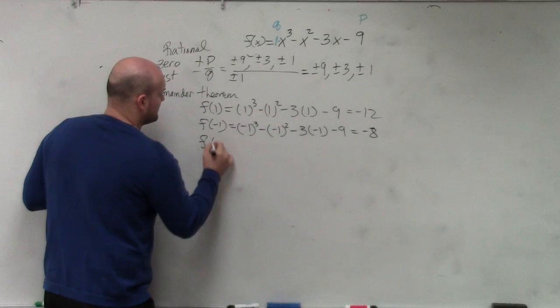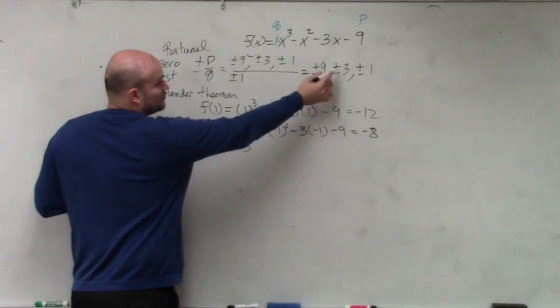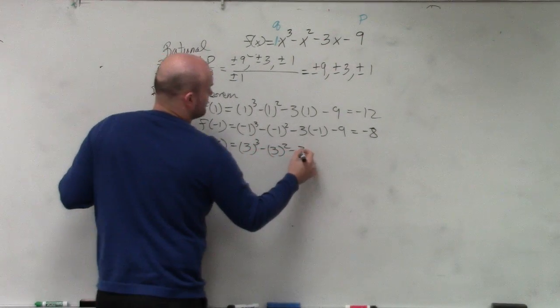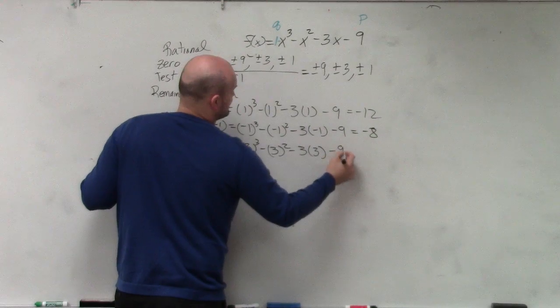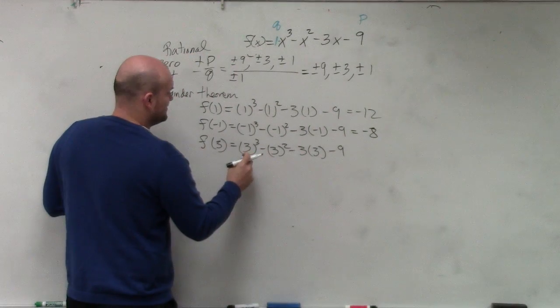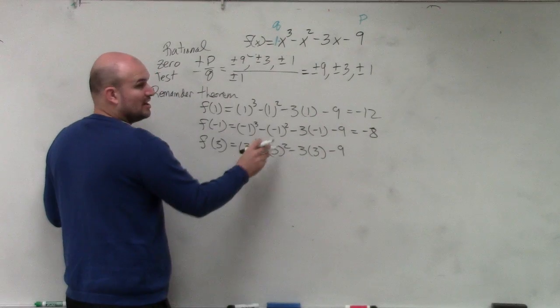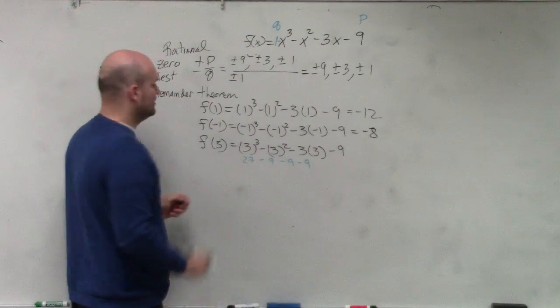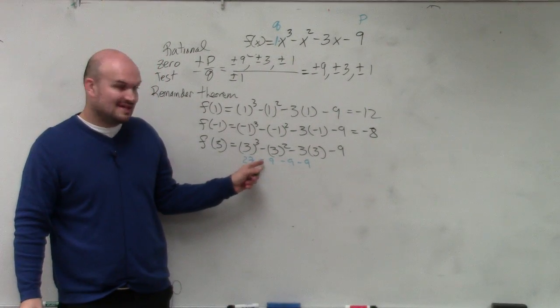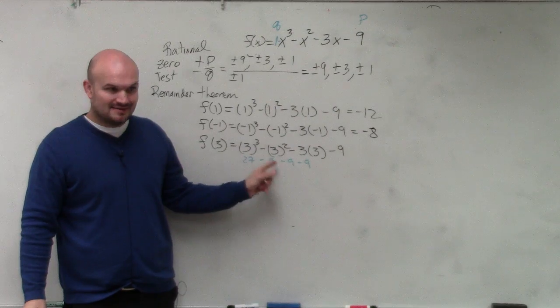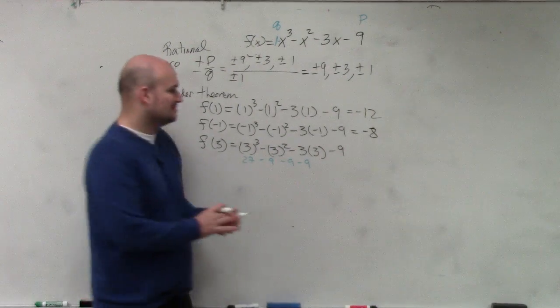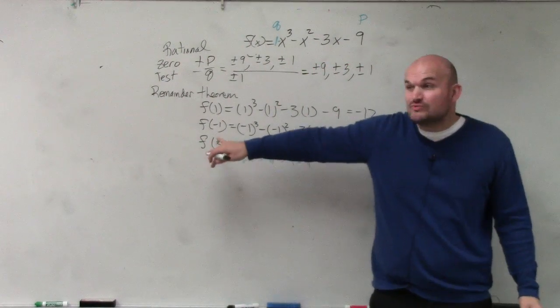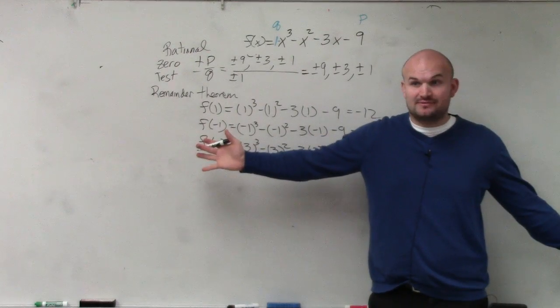So now I do f(3). 3 cubed minus 3 squared minus 3 times 3 minus 9. 3 cubed is 27, 3 squared is 9, 3 times 3 is 9 minus 9. Well, 27 minus 9 is 18, minus 9 is 9, minus 9 is 0. So guess what? 3 is a zero. That means that's a real zero. That's an x-intercept of our graph.